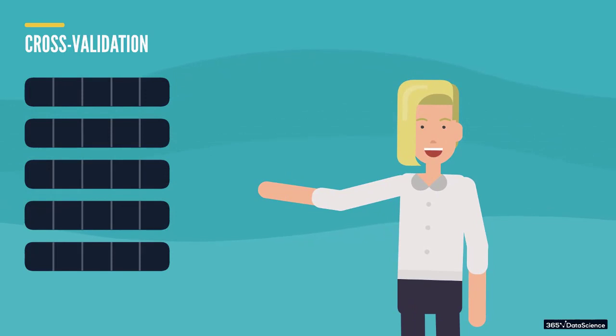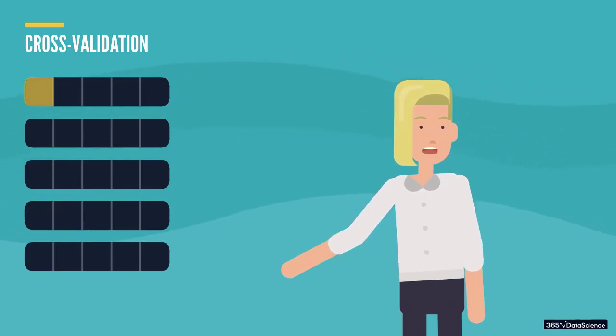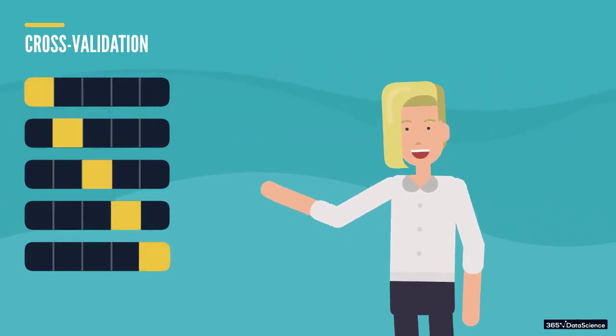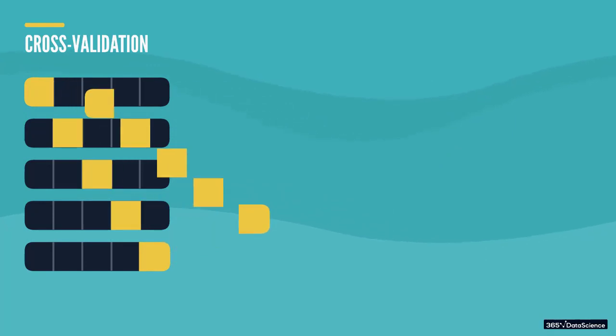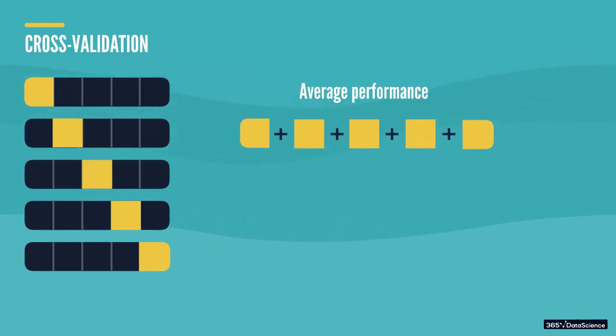This way, we're able to train a model on each of these different sets, evaluate its performance on the validation sets, and in the end, take the average performance of our algorithm across all five datasets.